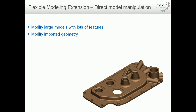Imported geometry has no history at all, so all of the features, the design intent, and the dimensions that went into creating that component have been lost. Any attempt to modify these parts usually requires a redesign or some brand new features to be placed onto that component. With Flexible Modeling, you can simply edit the design as you wish and place brand new design intent into this dumb solid.